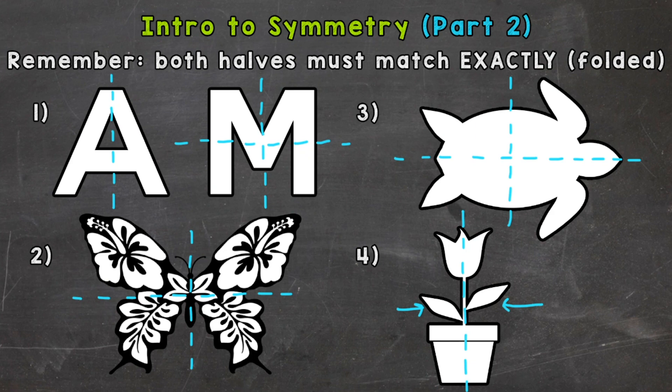Or little details up top like these leaves here would not match when folded over each other, or even this little bend in that leaf would make this object asymmetrical. Now the bottom pot, if we were just looking at that shape, that would be symmetrical with that vertical line. But overall, that shape, not symmetrical.